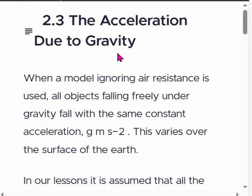The acceleration due to gravity when a model ignoring air resistance is used: all objects falling freely under gravity fall with the same constant acceleration, g meters per second squared. This varies over the surface of the earth.